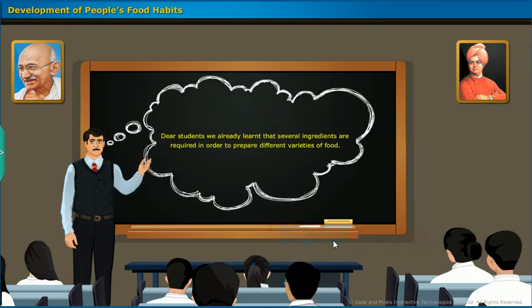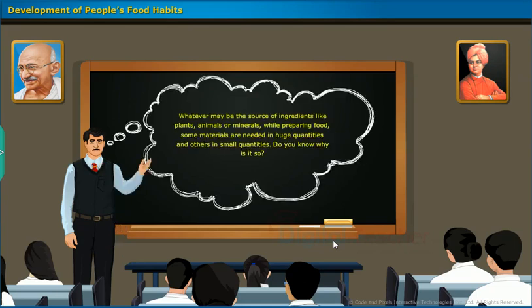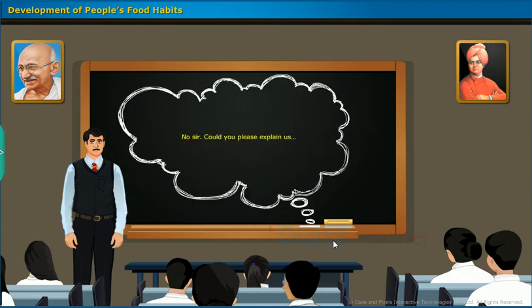We already learned that several ingredients are required to prepare different varieties of food. Whatever may be the source of ingredients — plants, animals, or minerals — while preparing food, some materials are needed in huge quantities and others in small quantities. Do you know why is it so?